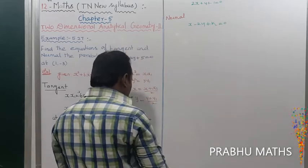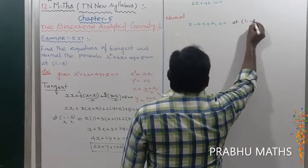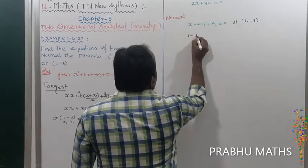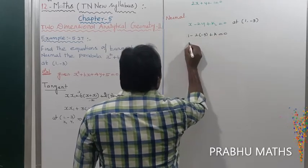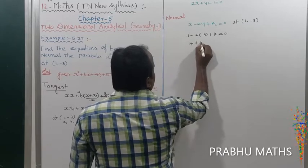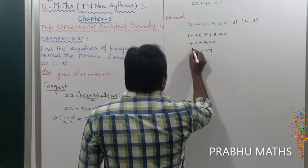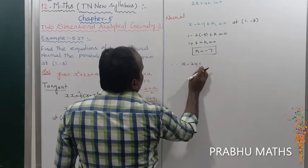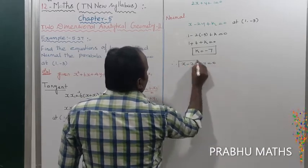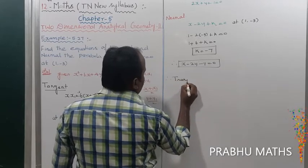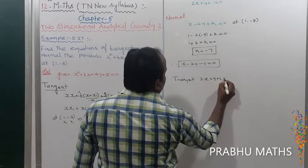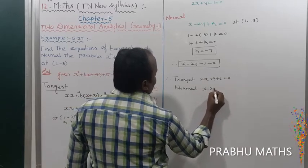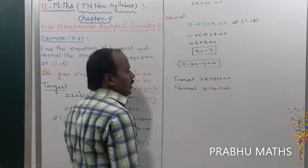The normal equation x - 2y + k = 0 passes through the point (1, -3). Substituting: 1 - 2(-3) + k = 0, so 1 + 6 + k = 0, giving k = -7. Therefore, the tangent equation is 2x + y + 1 = 0, and the normal equation is x - 2y - 7 = 0.